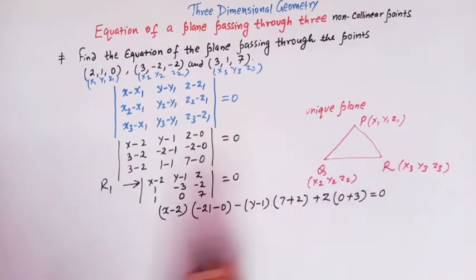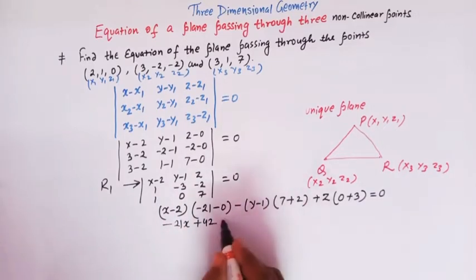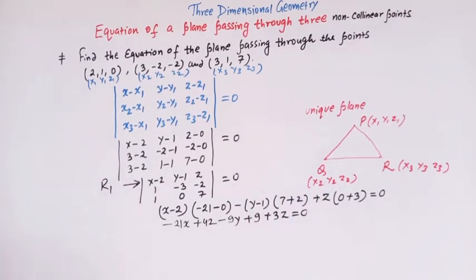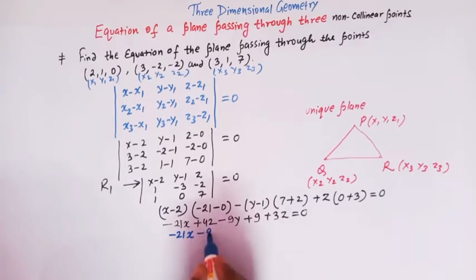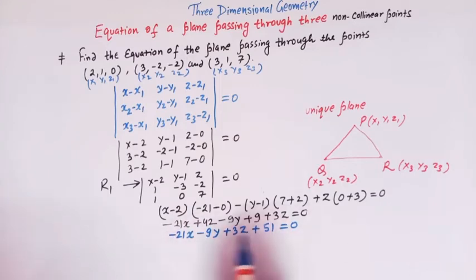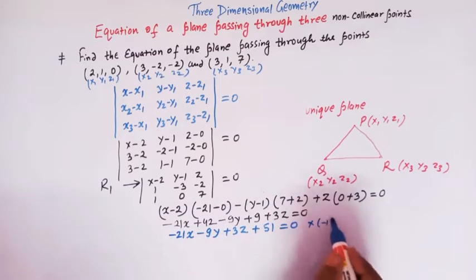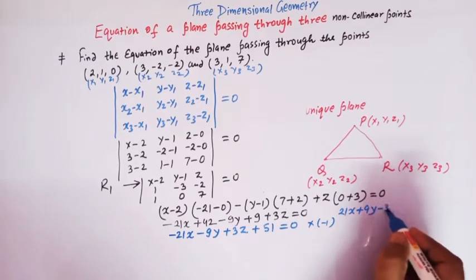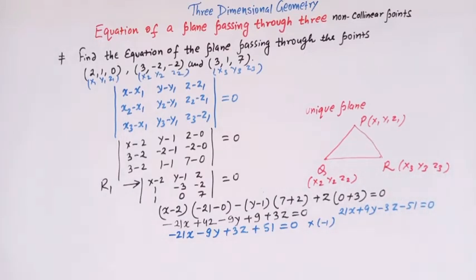Simplifying, we get −21(x − 2) − 9(y − 1) + 3z = 0, which gives −21x + 42 − 9y + 9 + 3z = 0, or −21x − 9y + 3z + 51 = 0. Multiplying through by −1, we obtain 21x + 9y − 3z − 51 = 0.